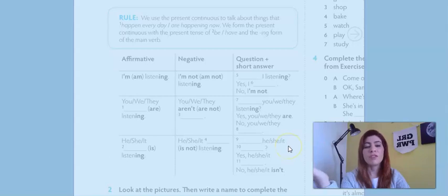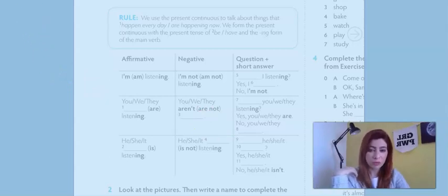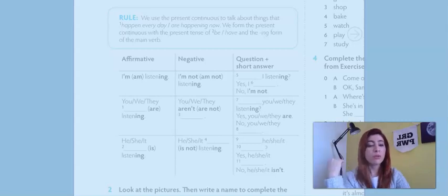And then if we have he, she or it, we do the same, but we change the verb. Because for he, she and it, we use is. So, is he listening? Is she listening? Is it listening? Yes, he is. Yes, she is. Yes, it is. Or, no, he isn't. No, she isn't. No, it isn't. All right? So, this is just a summary of how we use the present continuous. Now, let's move on to exercise number two to understand it a bit better.